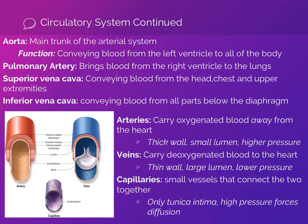The largest of all vessels is the aorta — it leaves the left ventricle and delivers blood to the heart itself and the rest of the body. The pulmonary artery takes blood to the lungs; all arteries carry blood away from the heart, but the pulmonary artery is the only one carrying deoxygenated blood. The superior vena cava brings blood from the upper body into the right atrium, while the inferior vena cava brings blood from the lower body.